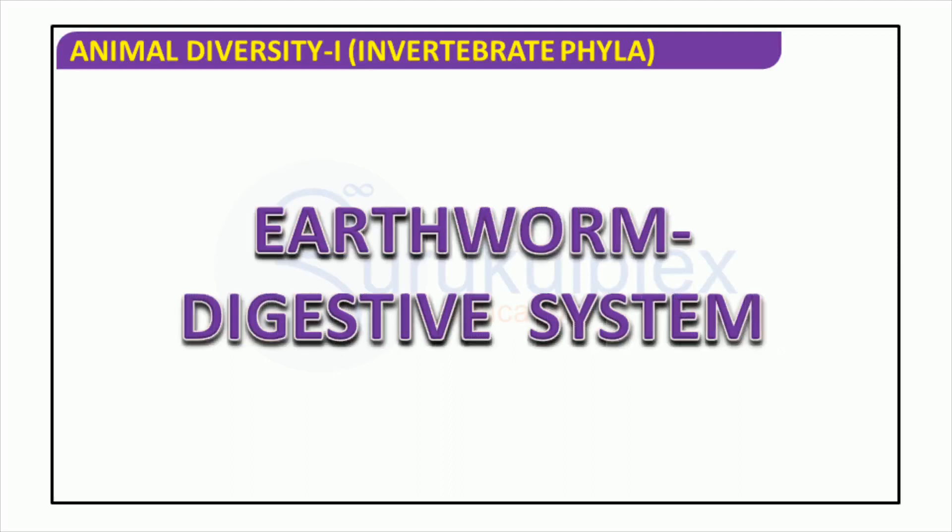Earthworms belong to the phylum Annelida and they are segmented worms. They have a specialized digestive system with a one-way passage, aiding in efficient digestion. Organic matter on the surface is consumed by the earthworms and converted into nutrients which are taken in by the worms. The food then goes from the pharynx to the gizzard, where it is mixed with small stones and dirt for further digestion. It is then passed on to the intestine where it is digested and eventually excreted.